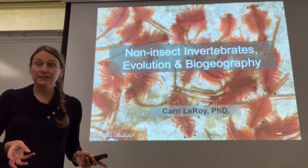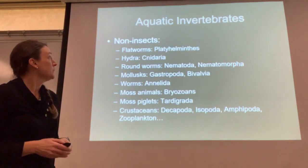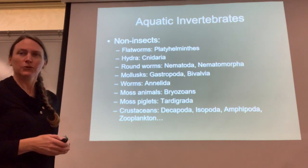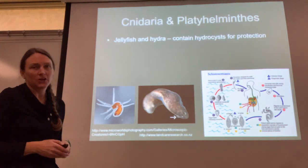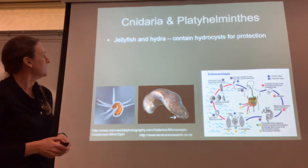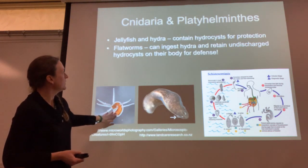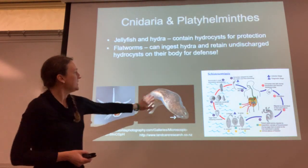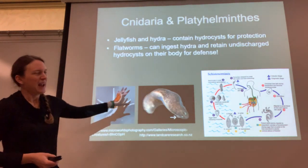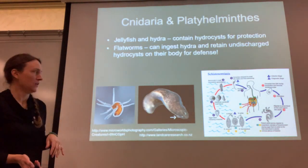Today we're going to talk about some of the non-insect invertebrates and then go into evolution and biogeography in chapter two. First are Cnidaria and Platyhelminthes — jellyfish and hydra. We have aquatic forms of hydra that contain nematocysts for protection. This flatworm in the group Platyhelminthes can actually ingest the hydra and retain undischarged nematocysts on their own bodies for defense. That's one way they're connected to each other.